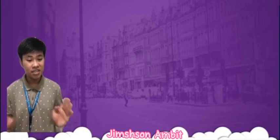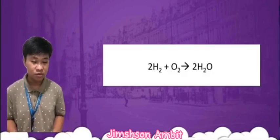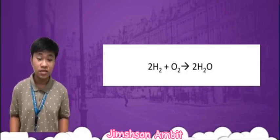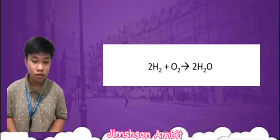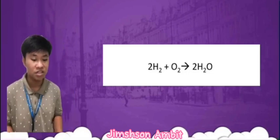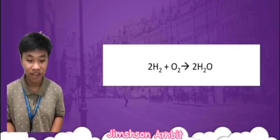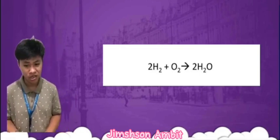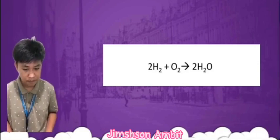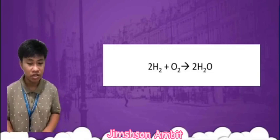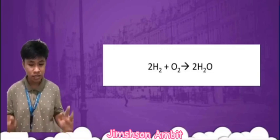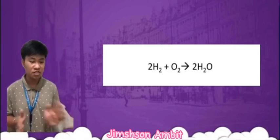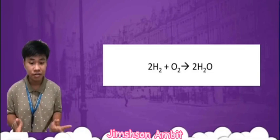Here is an example of how to calculate a limiting reagent in a chemical reaction. Let's say we have the following reaction: 2H2 + O2 = 2H2O. This tells us that 2 moles of hydrogen gas react with 1 mole of oxygen gas to form 2 moles of water vapor. If we start with 2 moles of hydrogen gas and 1 mole of oxygen gas, the hydrogen gas is the limiting reagent, because it will be completely consumed before the oxygen gas and the reaction will stop.